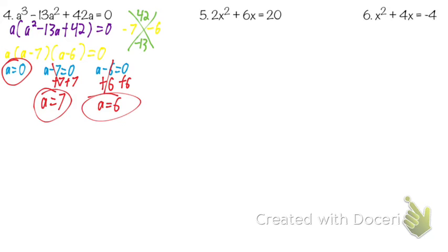Number 5: is this equal to zero yet? No. So what's our very first step? Subtract 20 — get it equal to zero. If I do it to one side, I have to do it to the other. The 20 is going third, after the x's. So we have 2x squared plus 6x minus 20 equals zero.